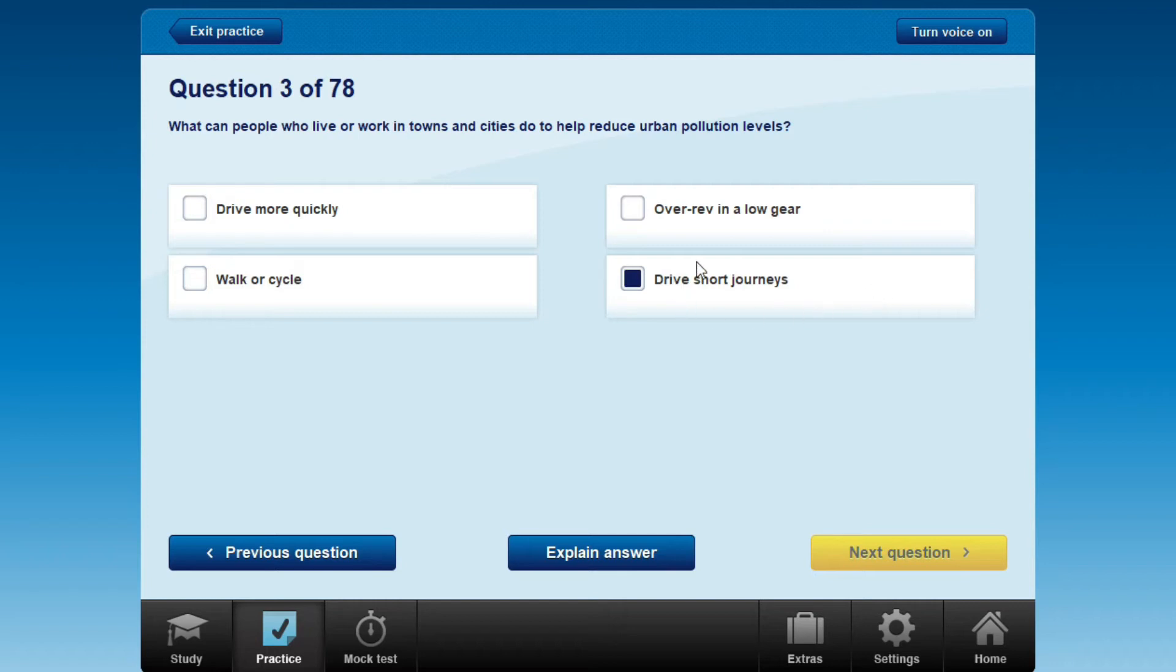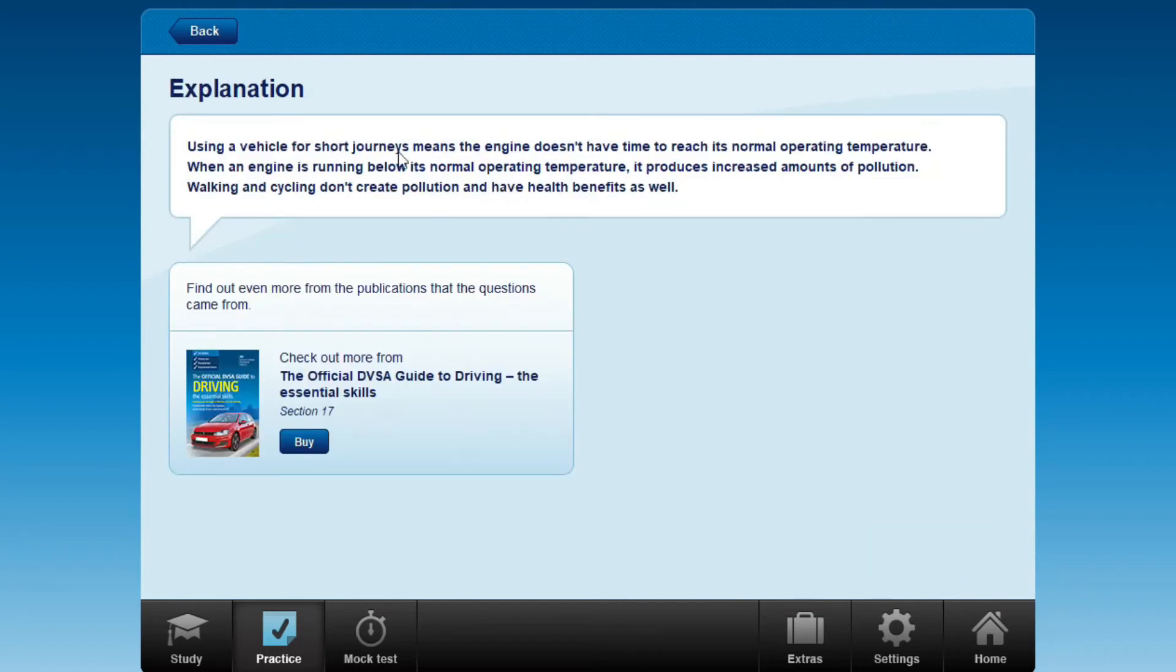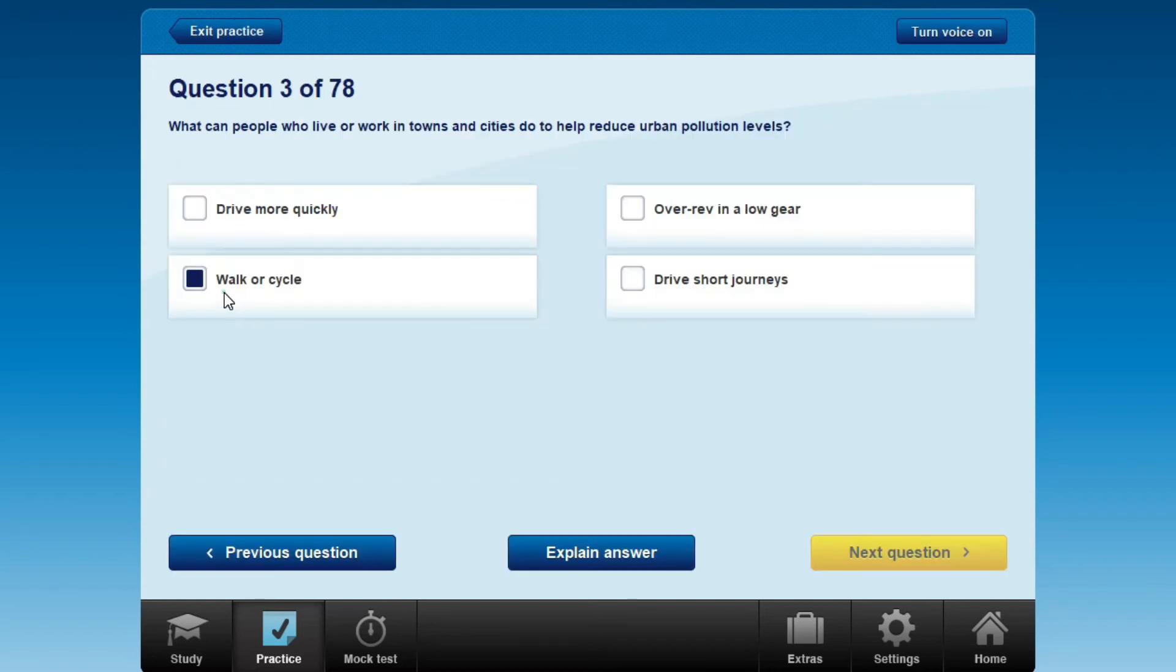Using a vehicle for short journeys means the engine doesn't have time to reach its normal operating temperature. When the engine is running below its normal operating temperature, it produces more pollution. Walking or cycling also has health benefits. So the answer is walk or cycle.